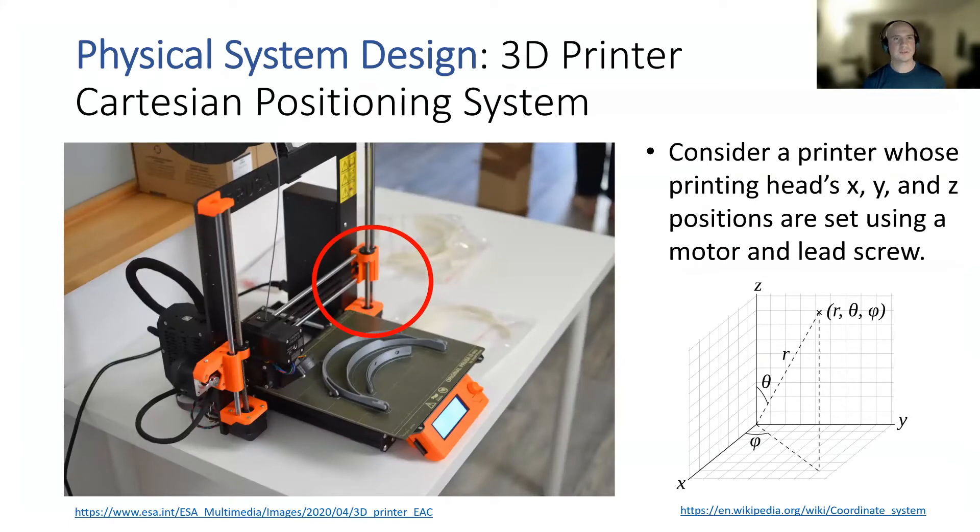Looking at our physical system design, we're going to be looking at a 3D printer with a gantry system that operates in Cartesian space. It's going to be actuated with a DC motor coupled to a lead screw, and that lead screw will have a carriage that our printing head is mounted to.